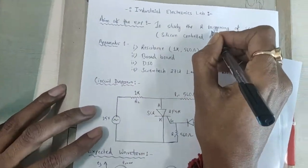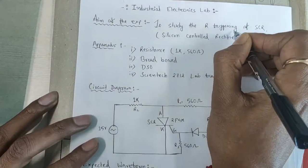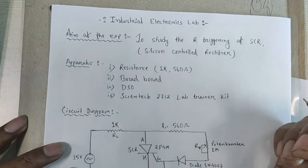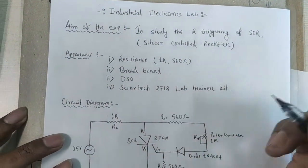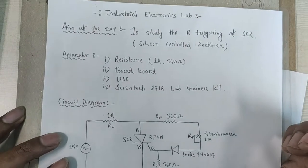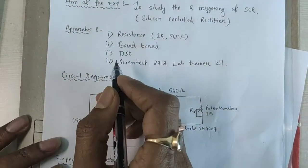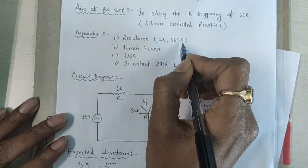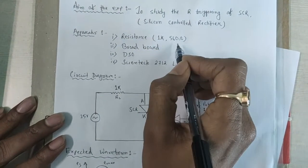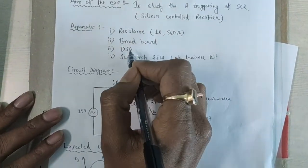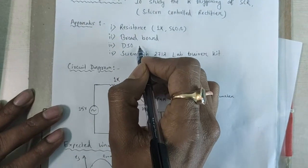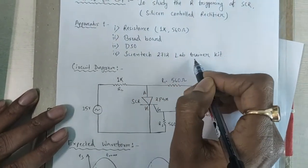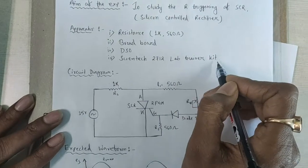First thing — what is triggering? Triggering means to turn on the SCR, or commutation means to turn off the SCR. To perform this experiment, a 1K and 560 ohm resistance, a DSO (digital storage oscilloscope), and the Syntec 2712 lab trainer kit are required.